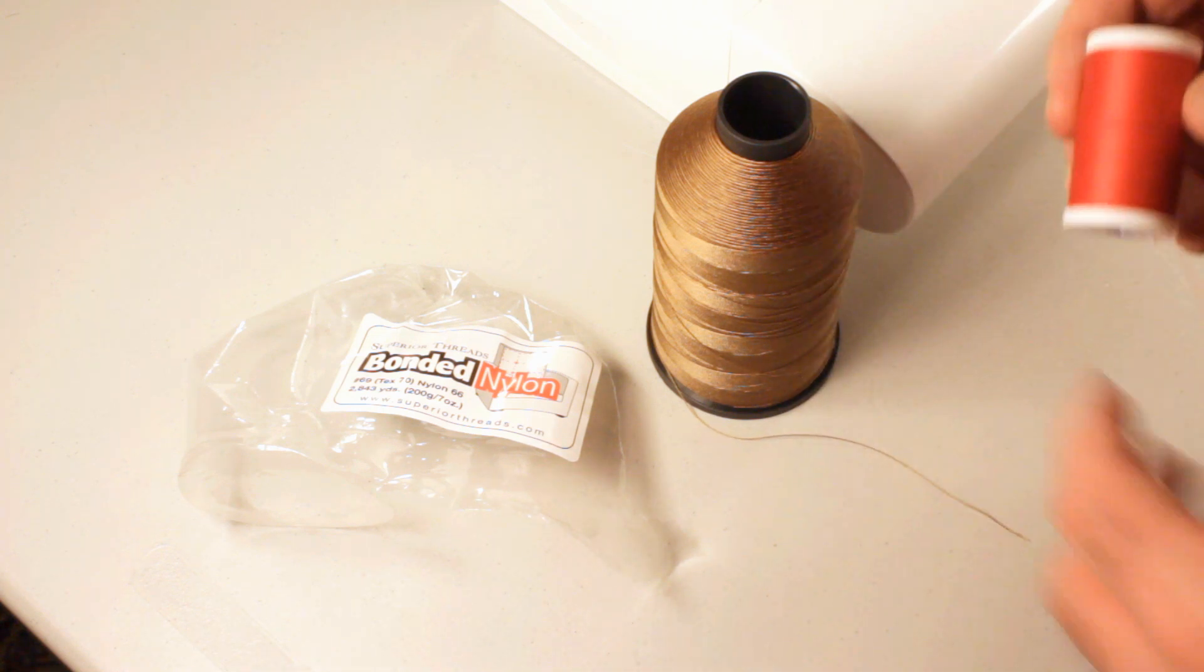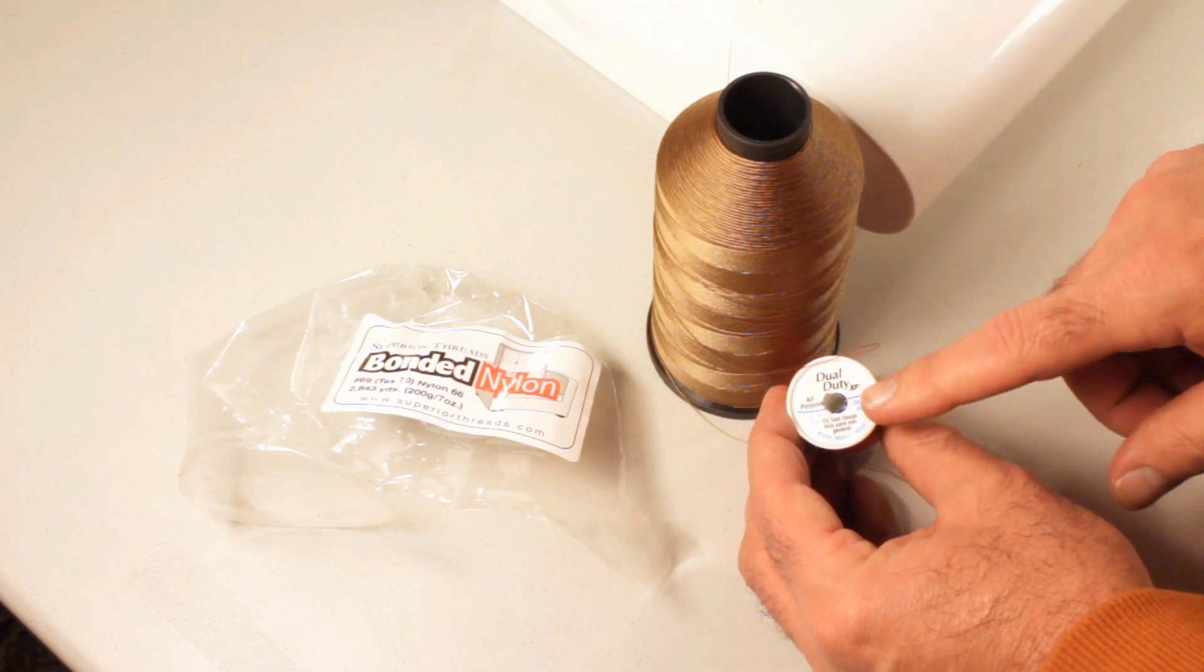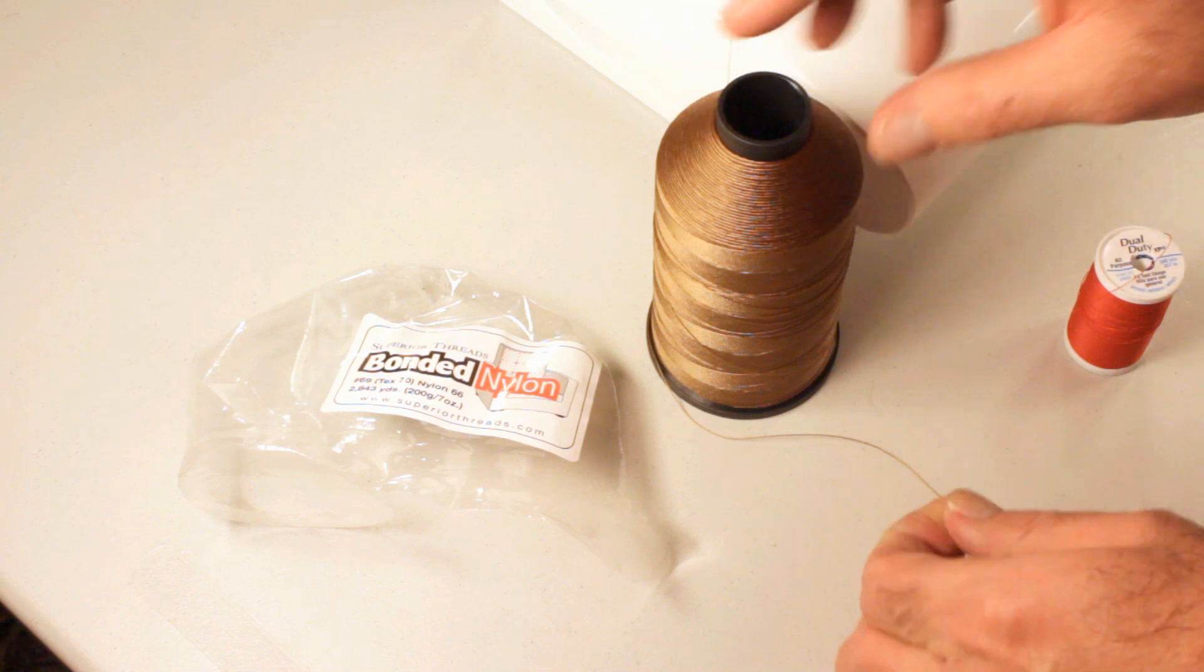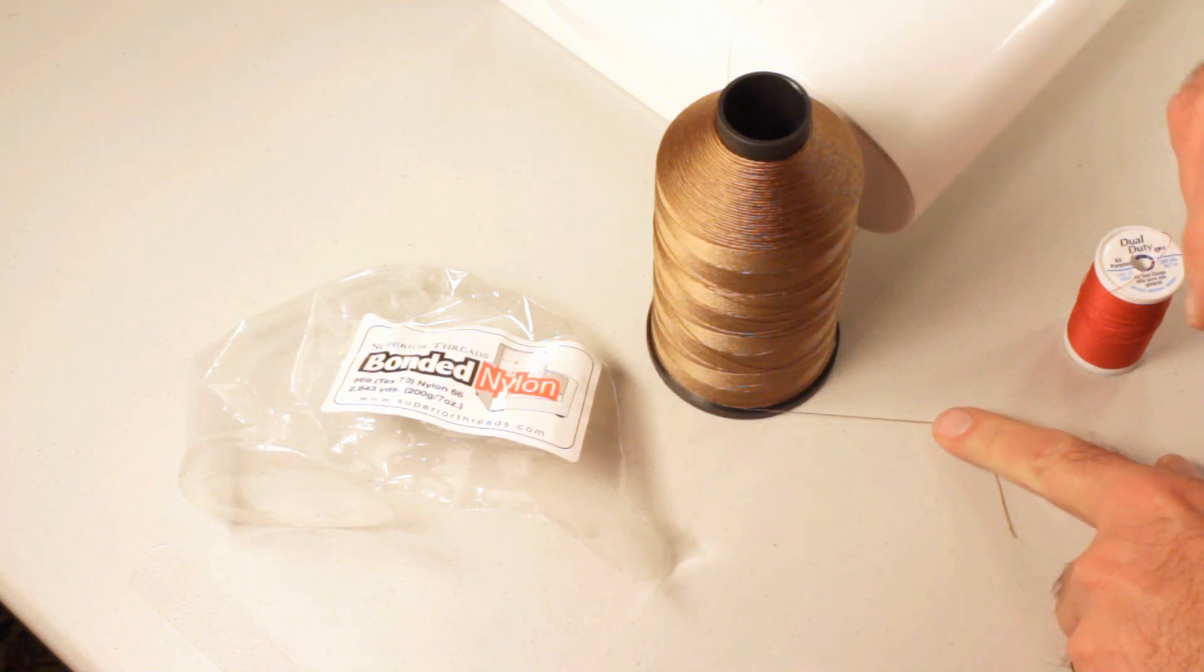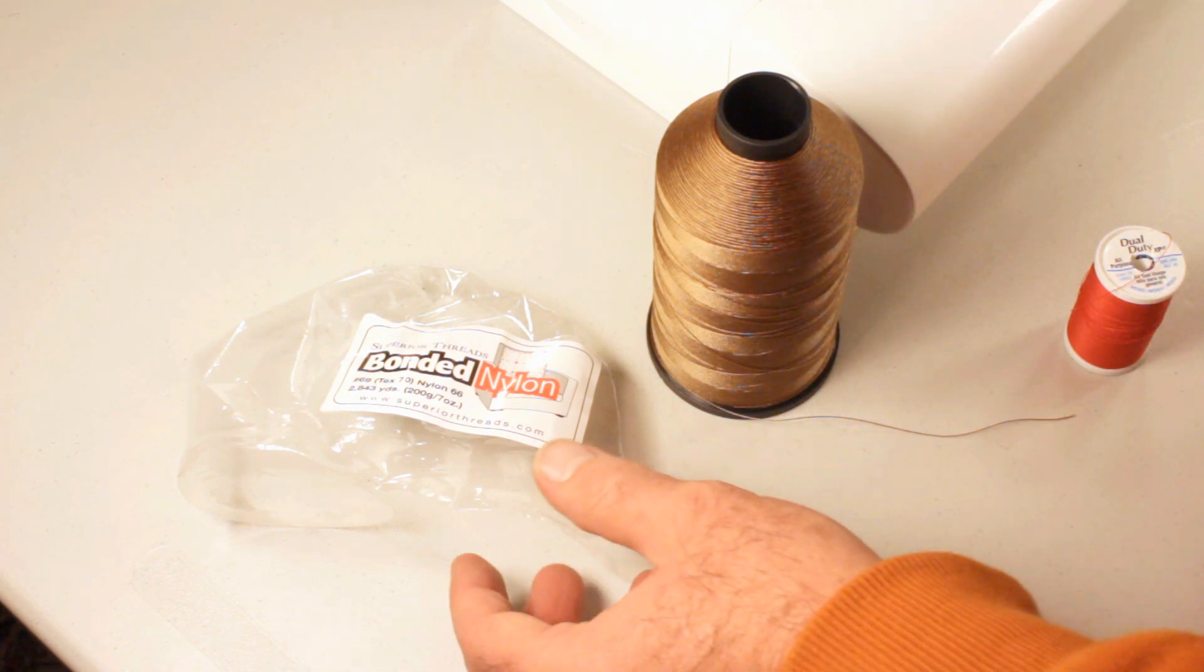I'm going to show you two different threads. This is a Coats and Clark Dual Duty XP. We will use it first. And then after that, we're going to use this nylon thread. It's an upholstery weight thread and it's also used for leather. I was sewing leather when I discovered the problem.